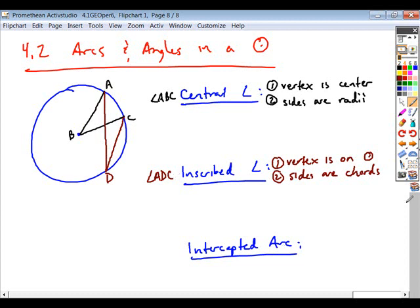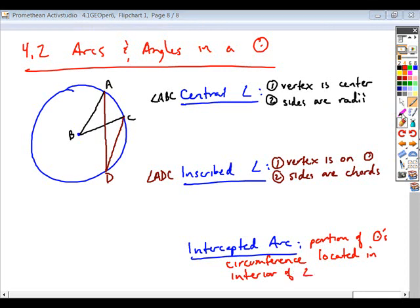And when you're looking at these two things, they each intercept the same arc. An intercepted arc is defined as the portion of the circle circumference that's located in the interior of an angle. So when you look at this central angle ABC, here's angle ABC, and if we look at all the interior points of that angle, what's the only portion of the circle that is contained in that interior? It is arc AC.